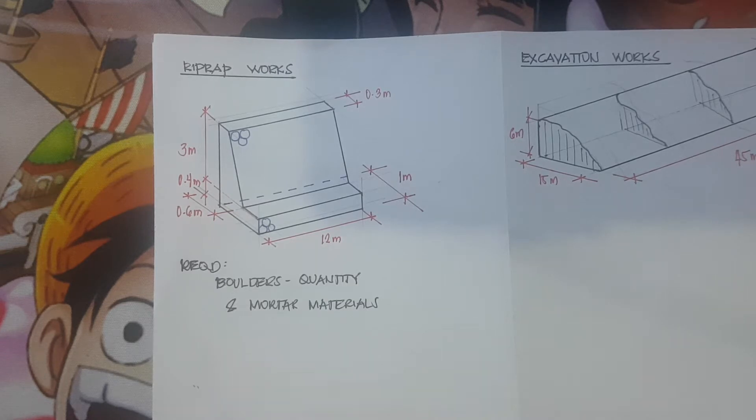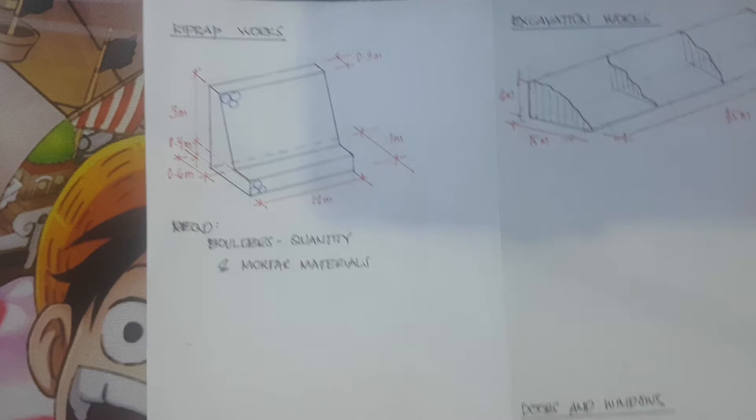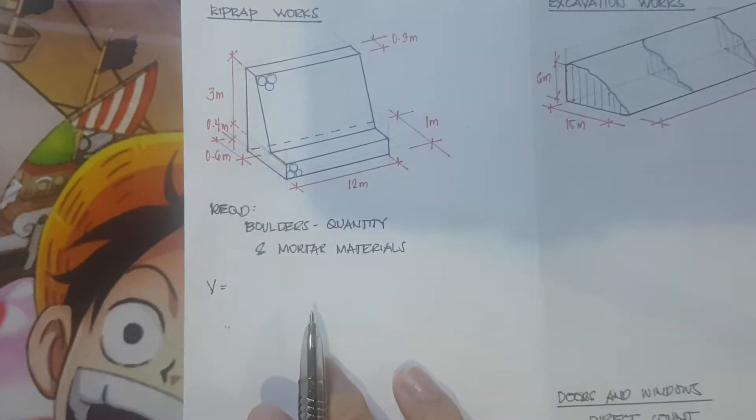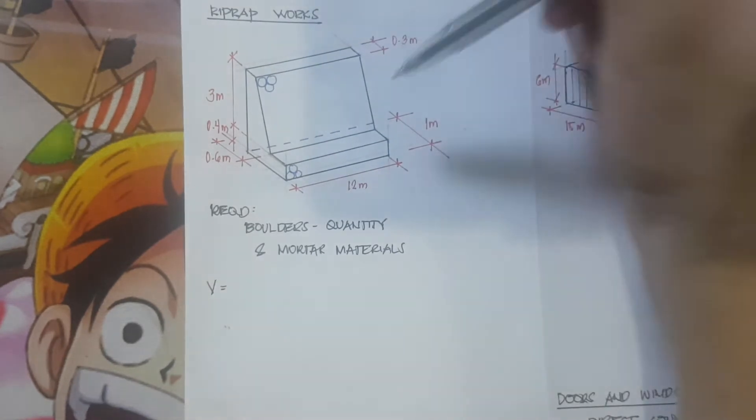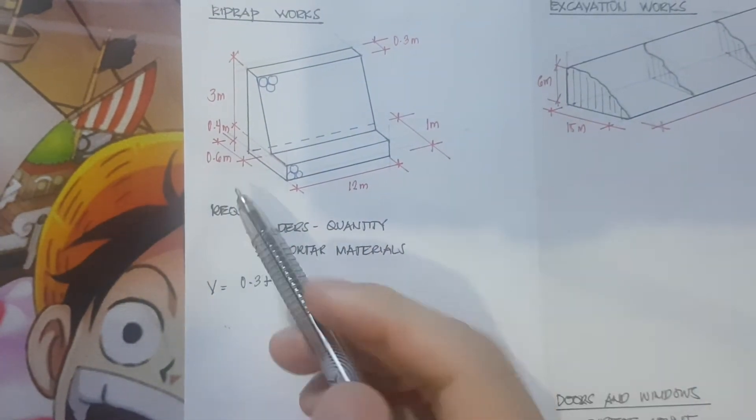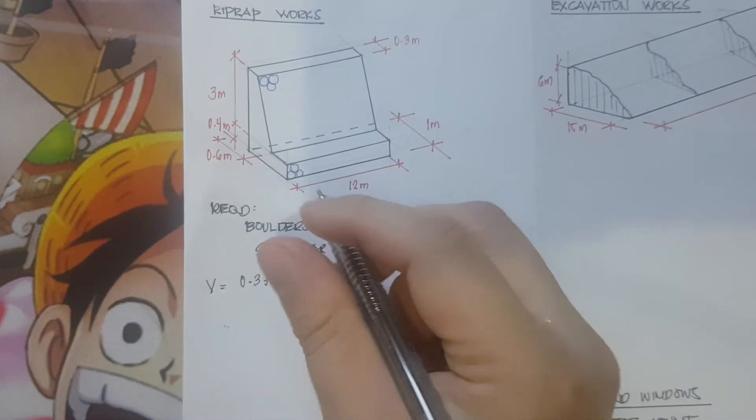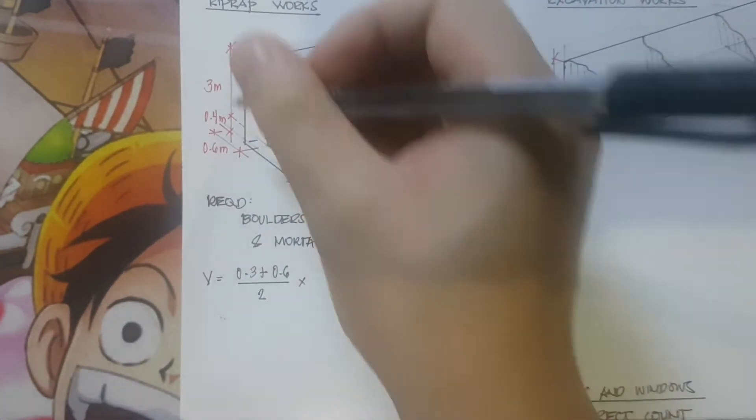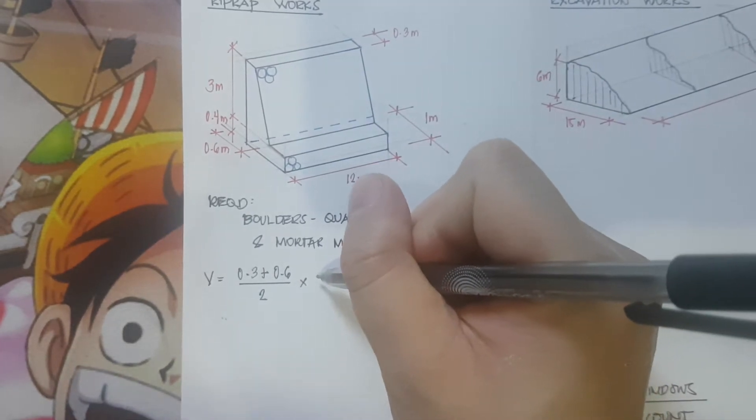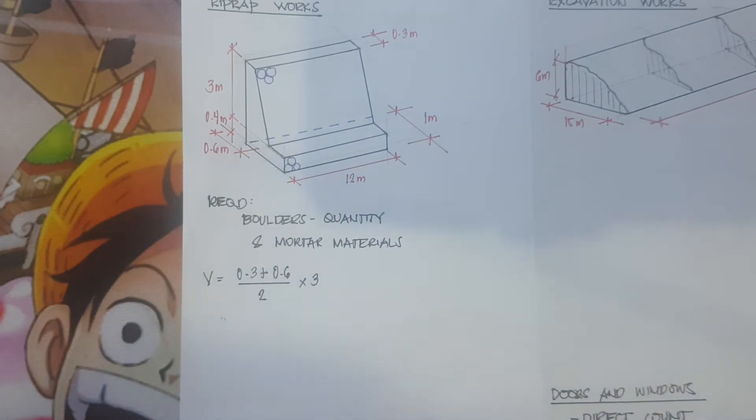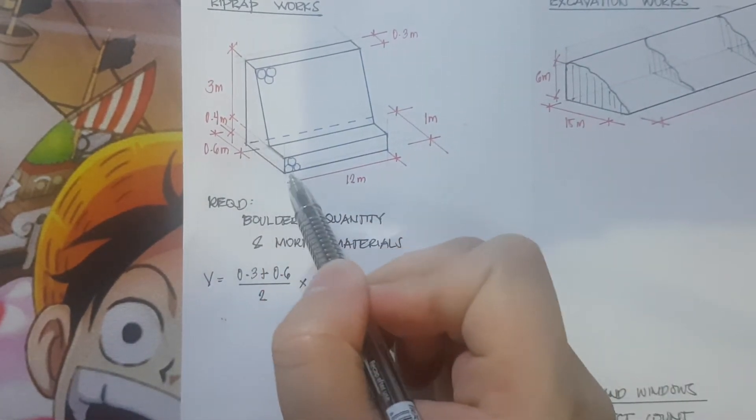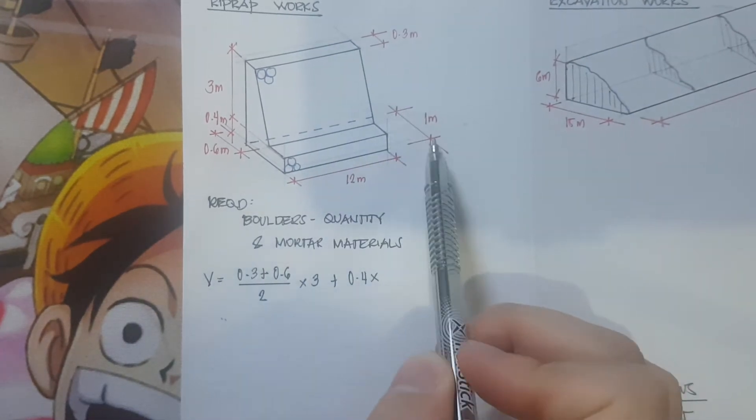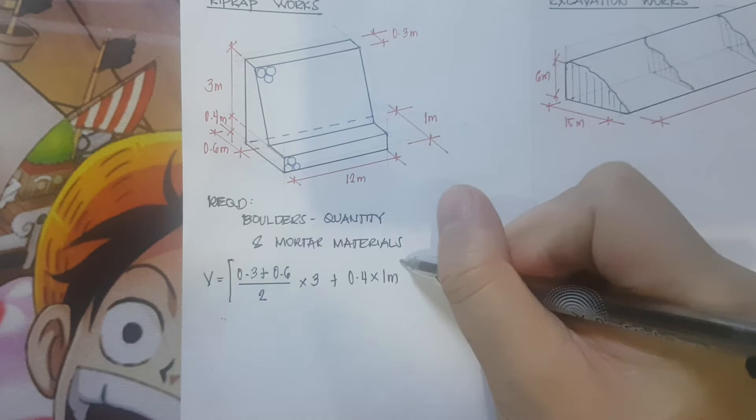In doing so, the first thing we need to do is determine the volume. What is the volume? Let's consider the cross-sectional area. We have 0.3 plus 0.6 divided by 2, times 3, plus 0.4 for the footing times a length of 1 meter. Then multiply the whole equation by the length which is 12 meters.